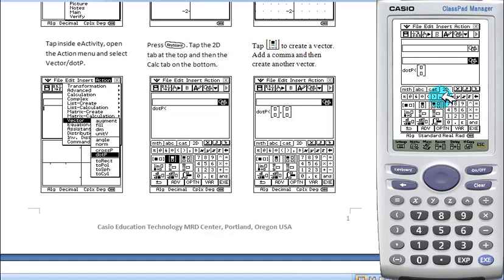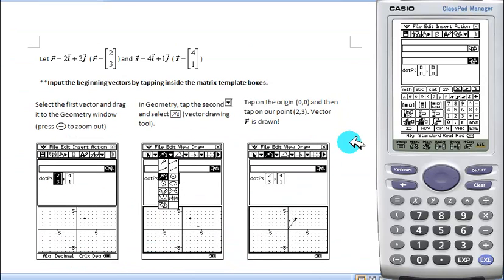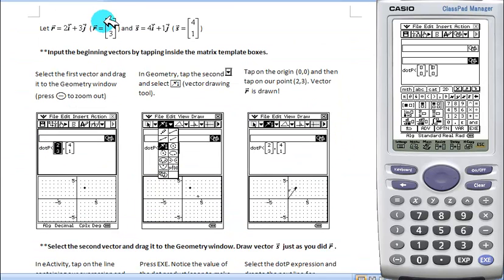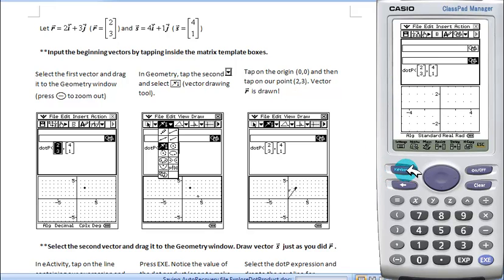Since we're going to be finding the dot product of two vectors, we're going to put a comma after that vector and insert another one. Now these are the vectors that we want to take the dot product of. So we fill in our numbers: 2, 3, 4, 1, and shut off our keyboard to see our geometry window.